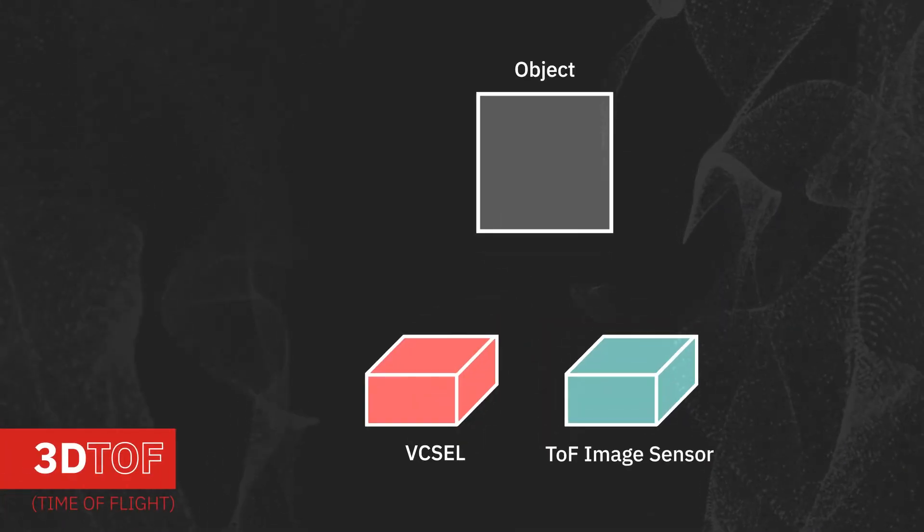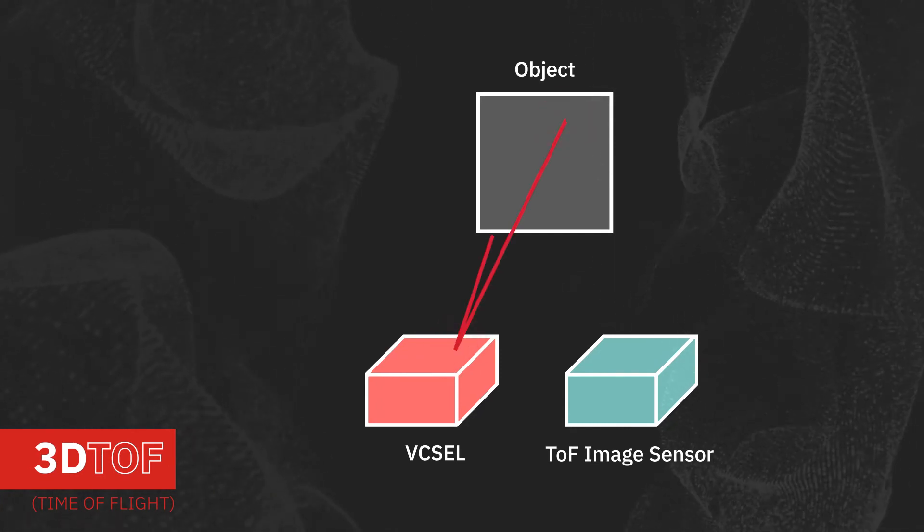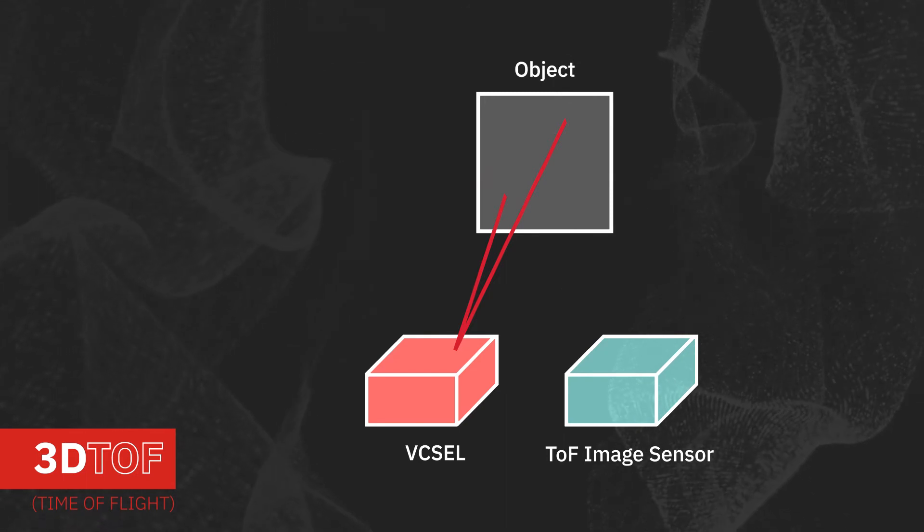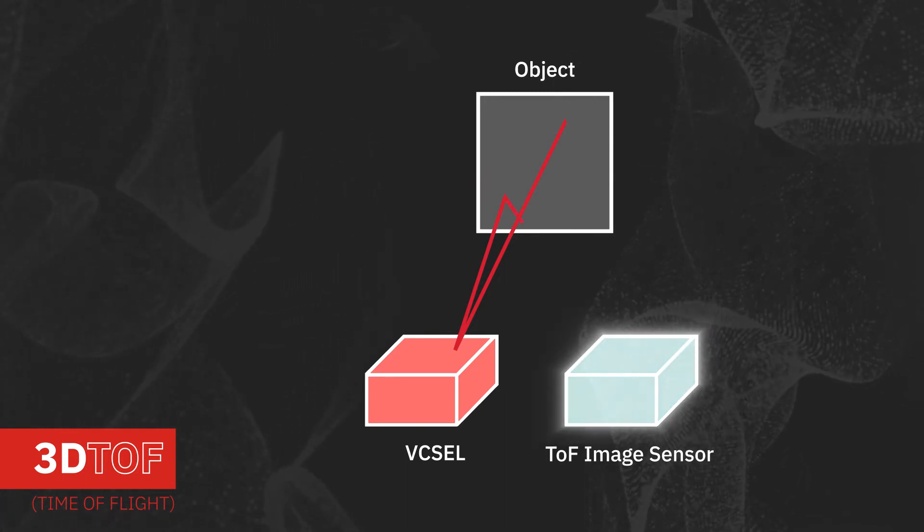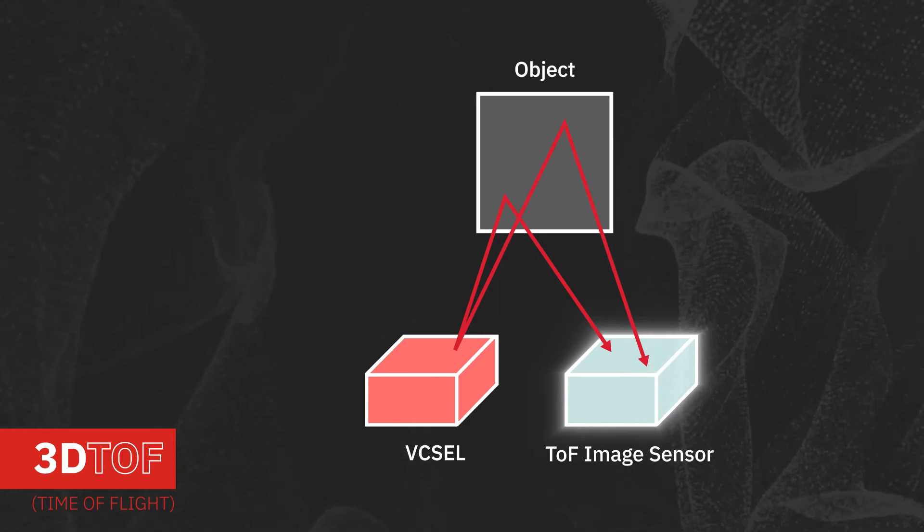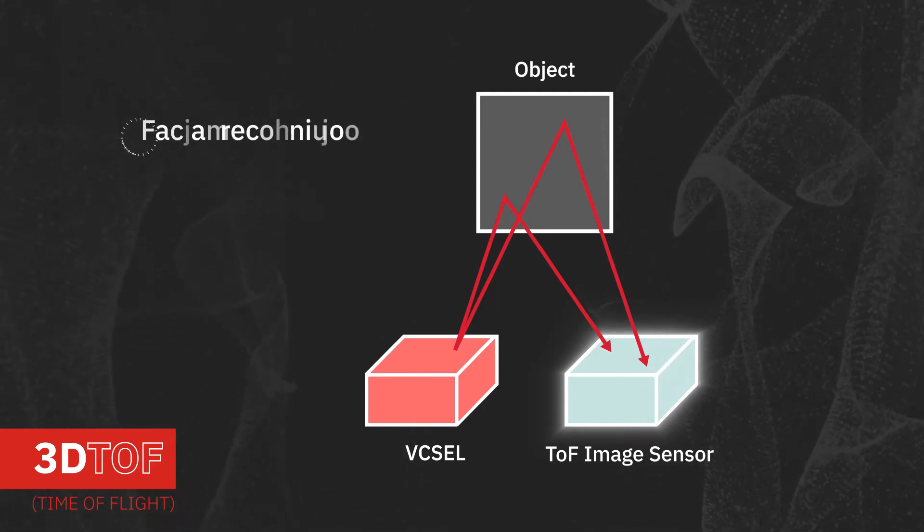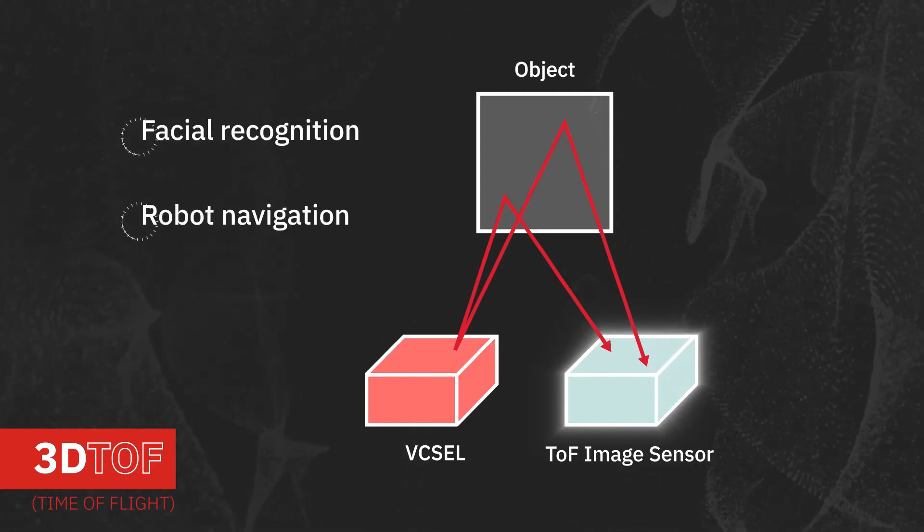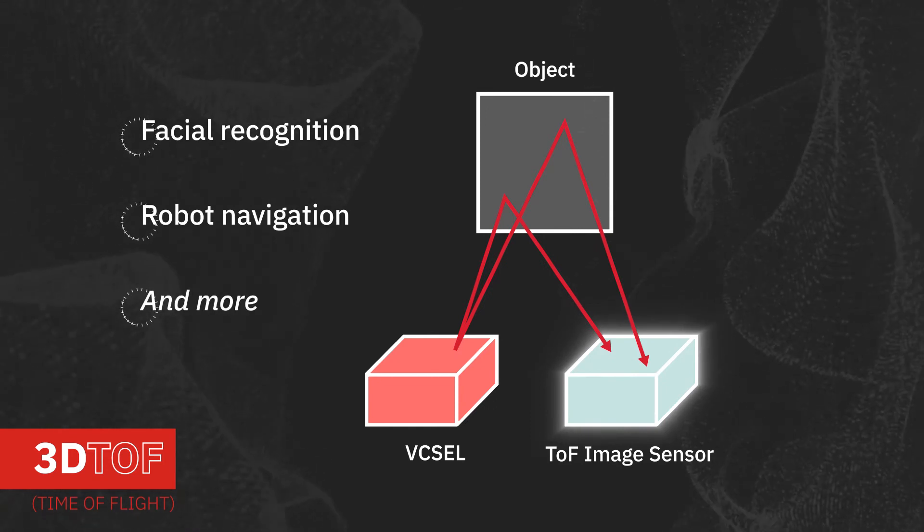In 3D time-of-flight applications, the VCSEL is used as a flood illuminator, projecting infrared light at uniform intensity into the target area, and an image sensor is used to measure the time-of-flight to individual pixels. This is used to create a 3D map of the target area, and is commonly used in facial recognition, industrial robot navigation, and other applications.